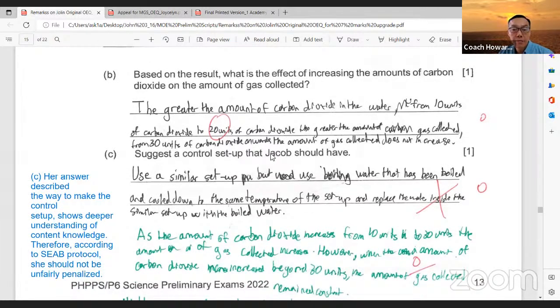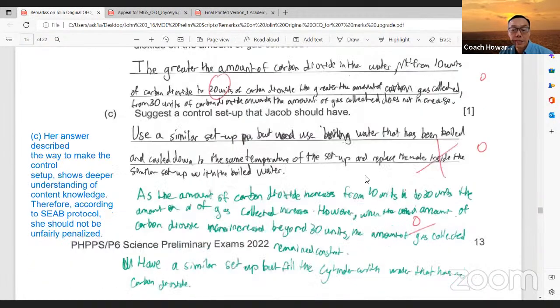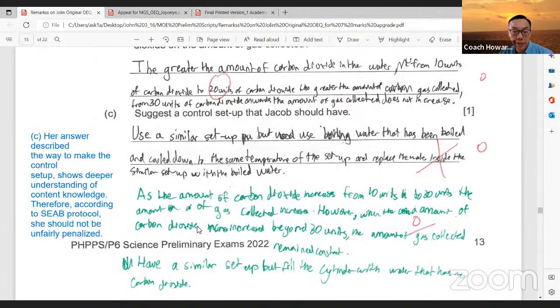Suggest a control setup that Jacob should have. Her answer described the way the control setup shows deeper understanding. The way she presents actually shows deeper understanding of content knowledge. Therefore, according to SEAB protocol, she should not be penalized. If you read her answer, she actually knows that boiling water will drive out the gas in the water.